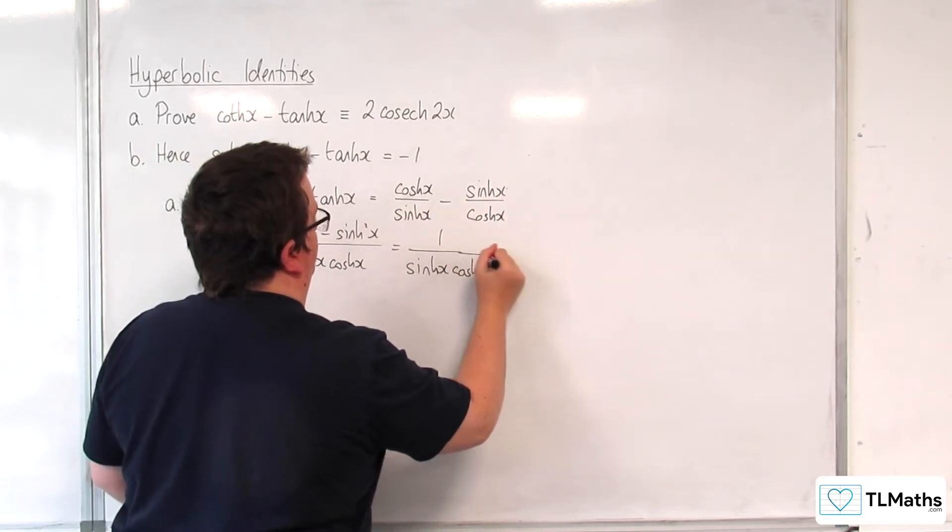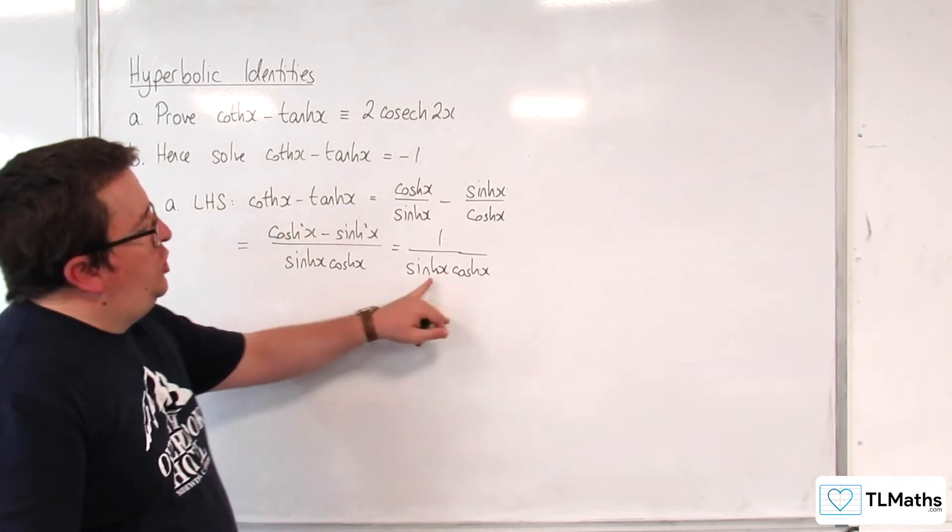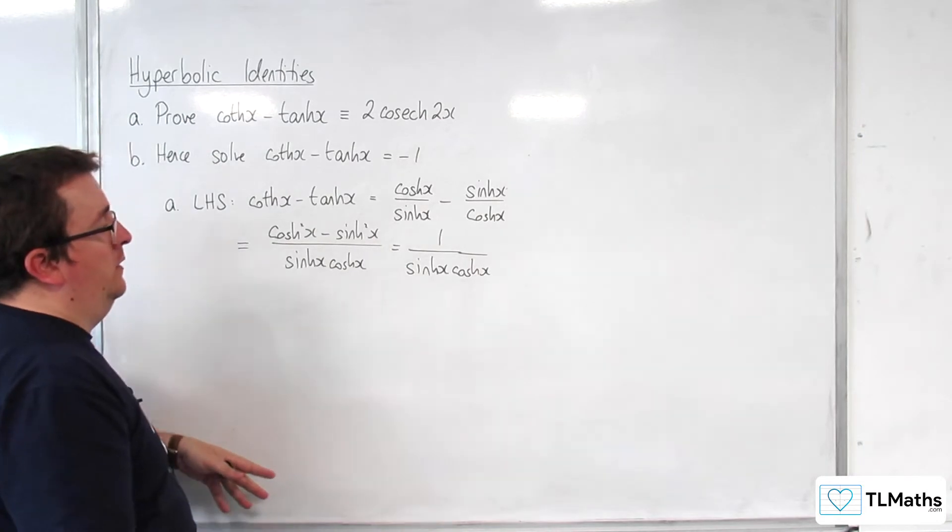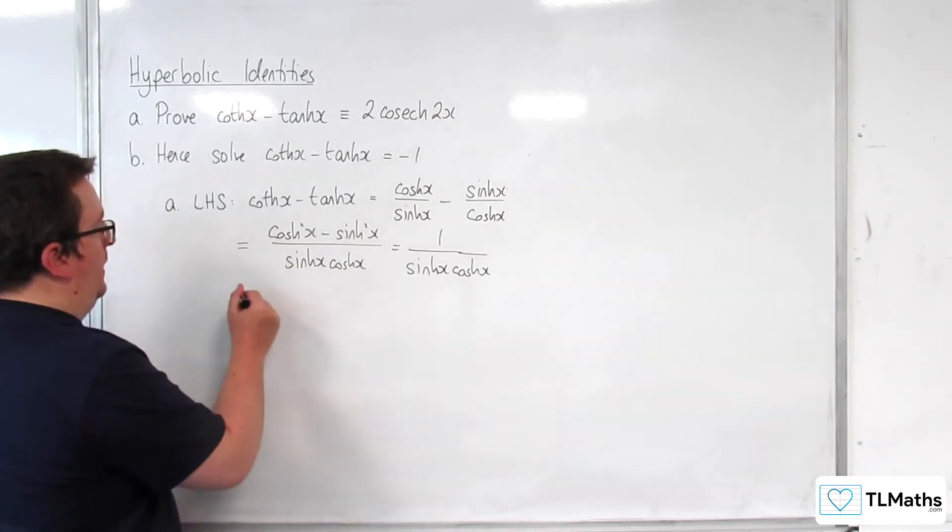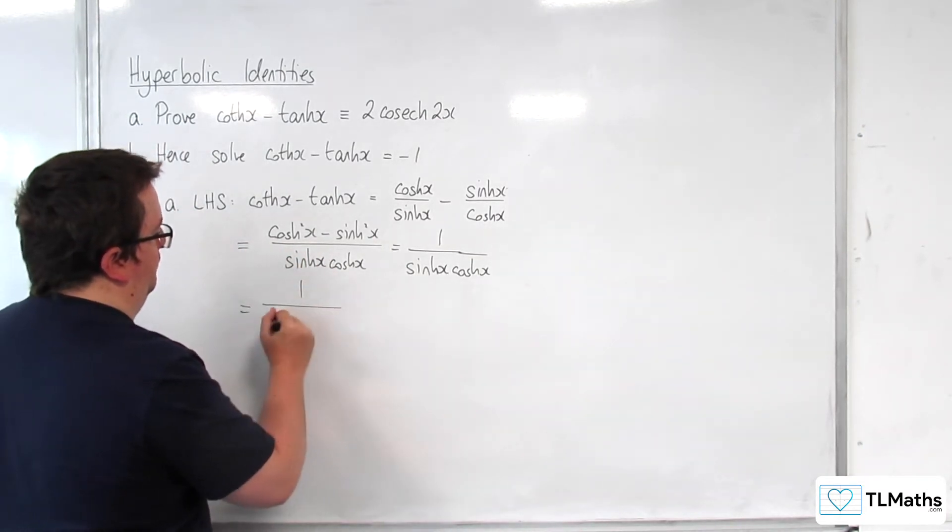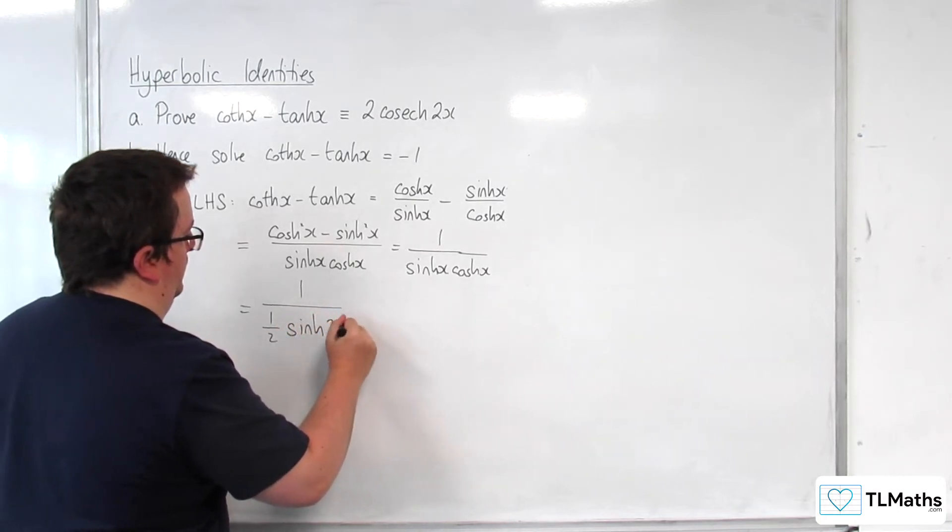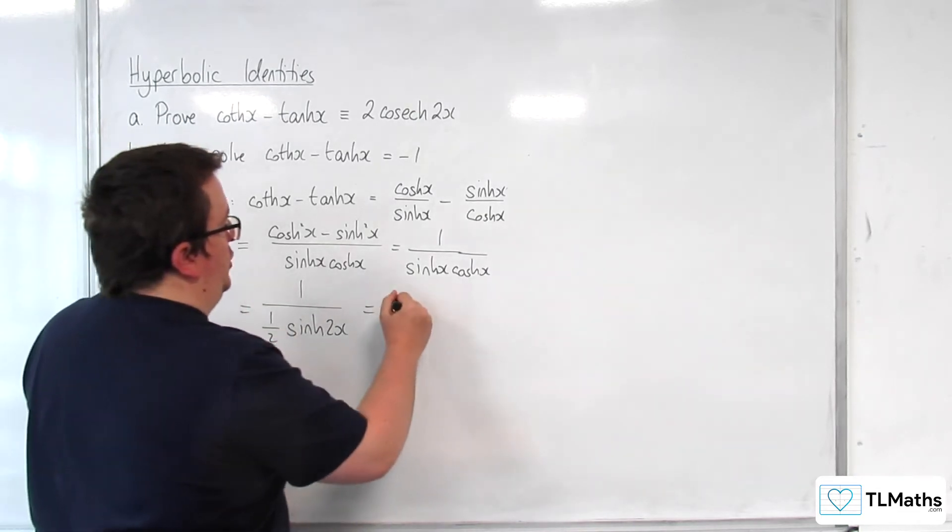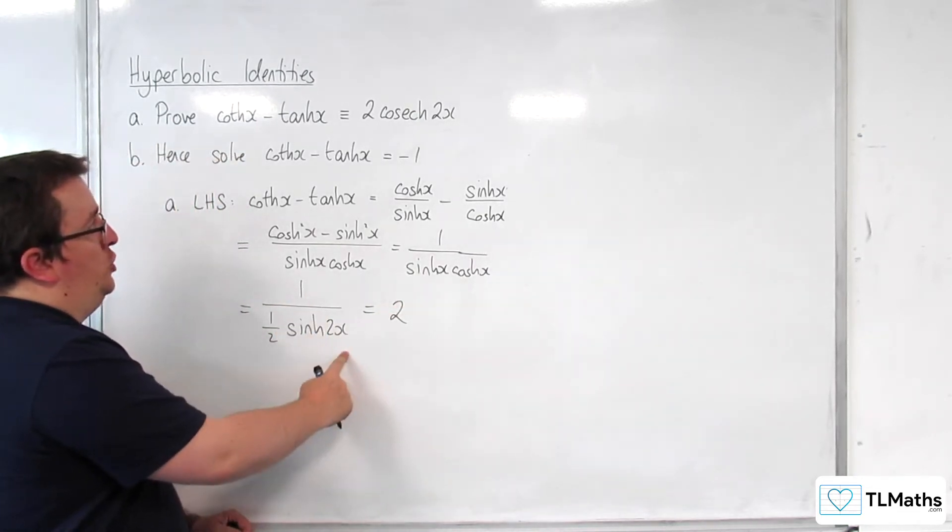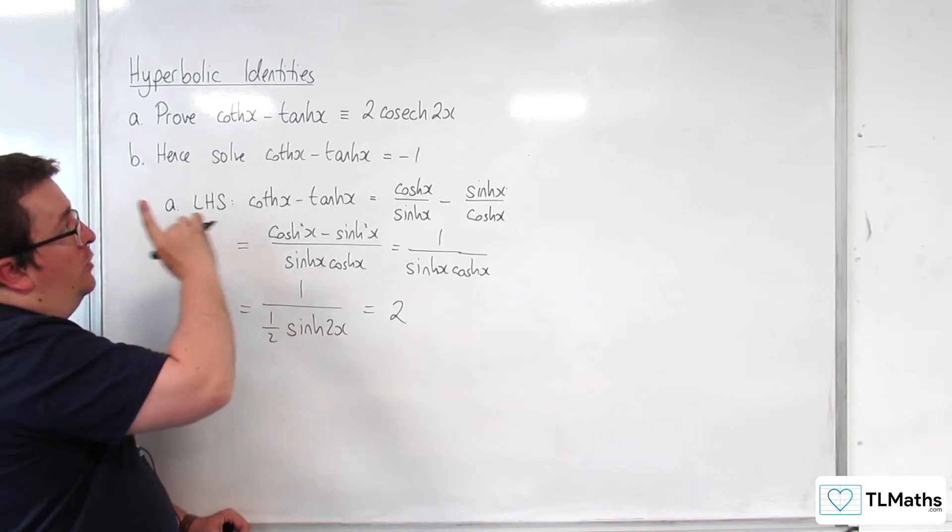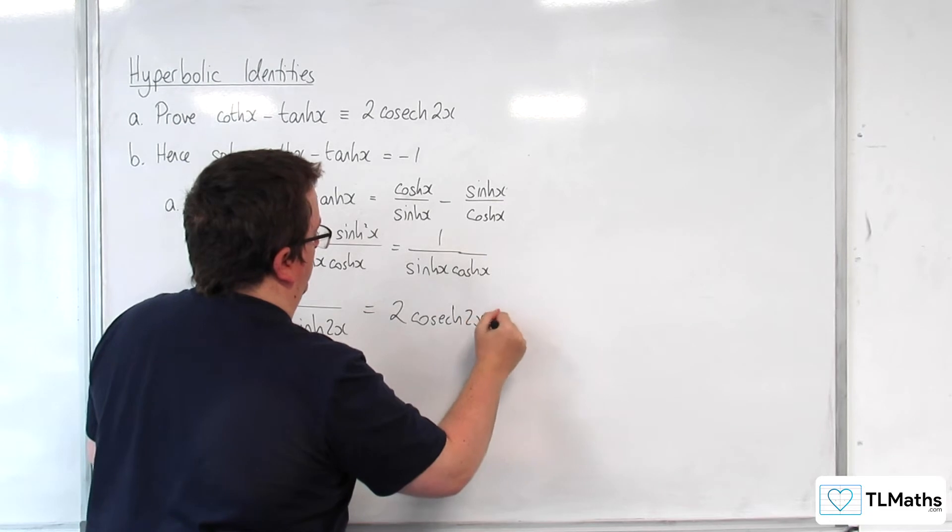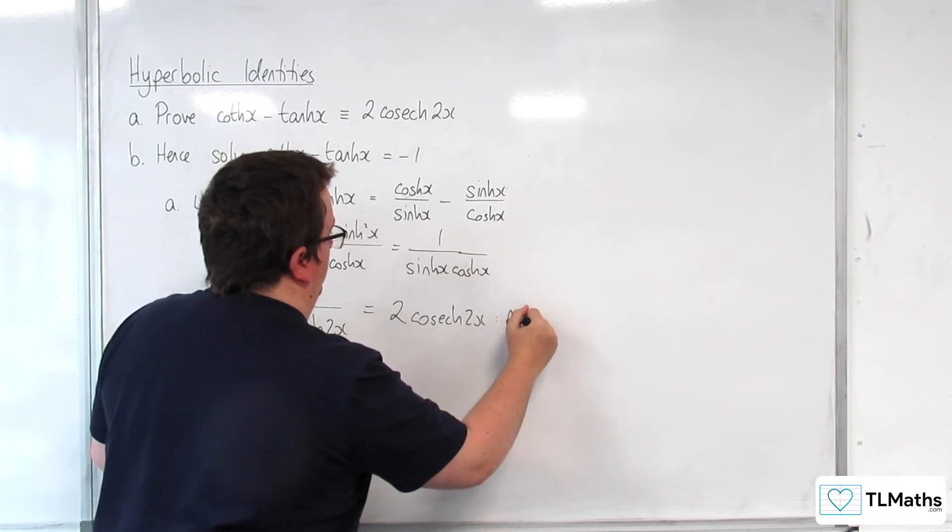So we have that. Now sinh x cosh x is 1 half of sinh of 2x. So that means we've got 1 over 1 half, which is 2. 1 over sinh of 2x is cosh of 2x. And that's our right hand side.